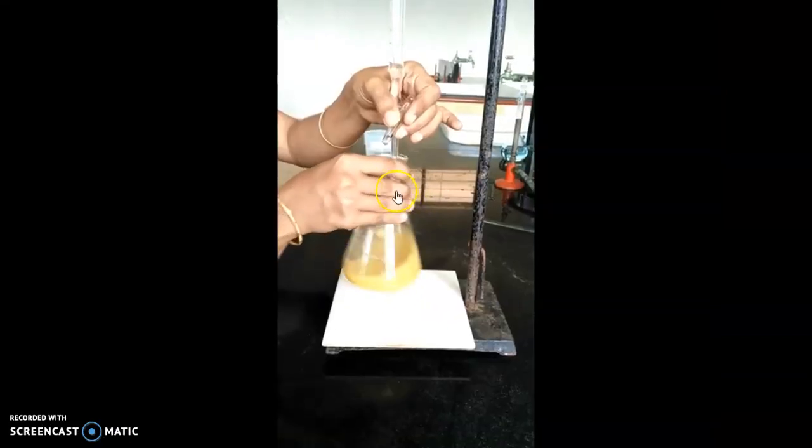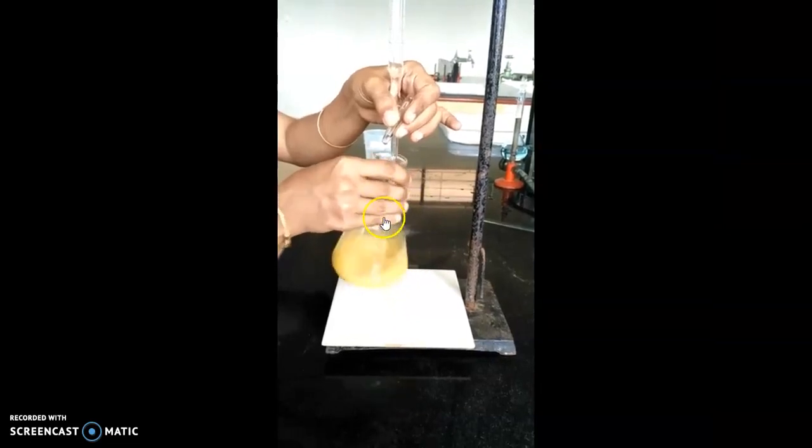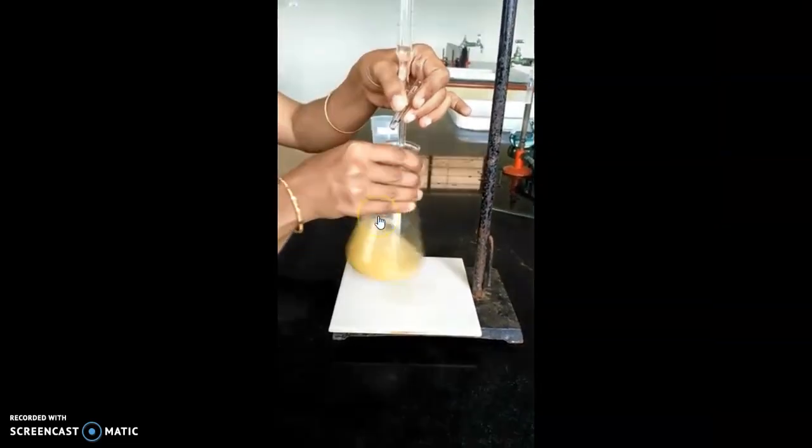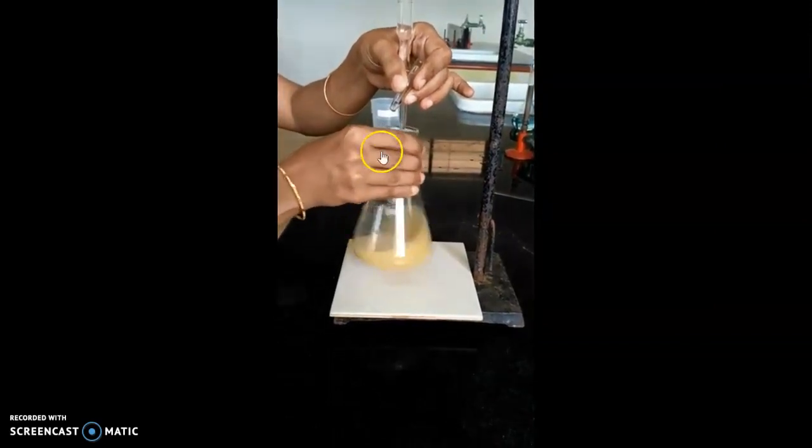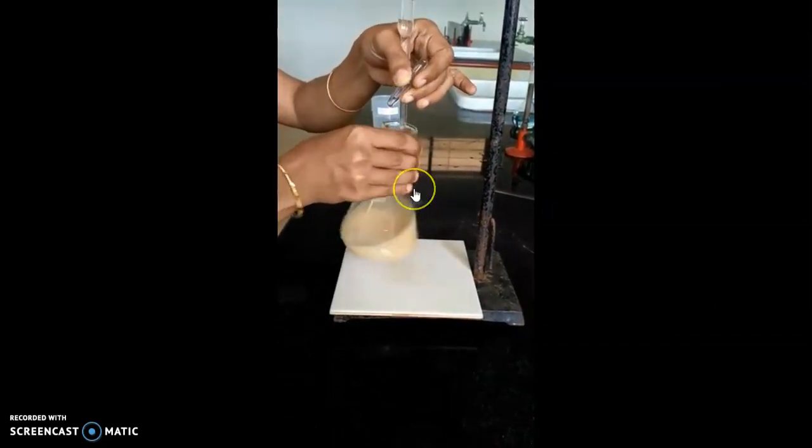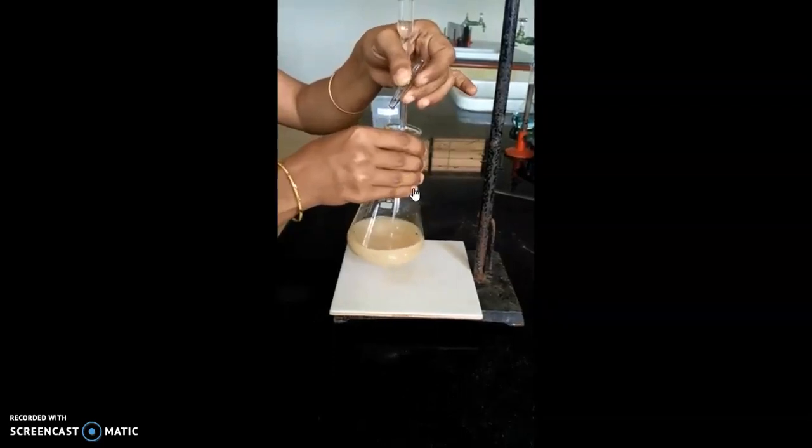And again, it has to be made to pale yellow. All the iodine will react with the hypo solution now, and pale yellow.